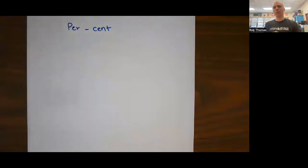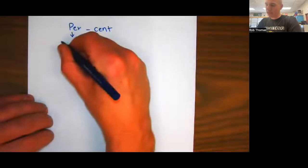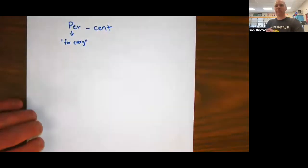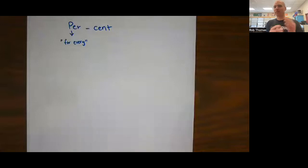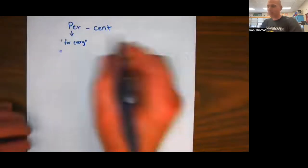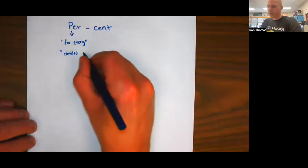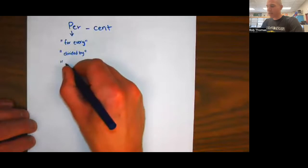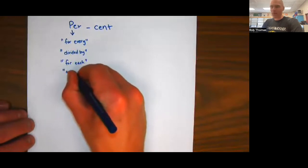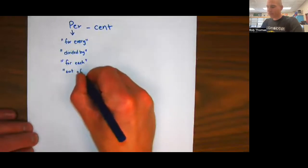So per is a weird, difficult word to describe or explain or define. But usually when I ask this question, some things students say are like it means for every. To have five of this per three of that means to have five of this for every three of that. Similarly, in class I tell you that mathematically you could think of it as divided by. That helps a lot, especially with calculations. For each is another one you hear. Out of is one people say a lot - three out of five, three per five.